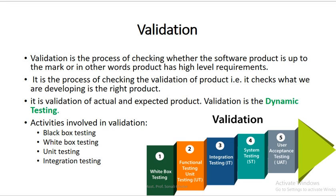In validation, we compare the actual and expected result or expected product. It is dynamic testing. The different types of testing involved include white-box testing, functional testing or unit testing, integration testing, system testing, and user acceptance testing.